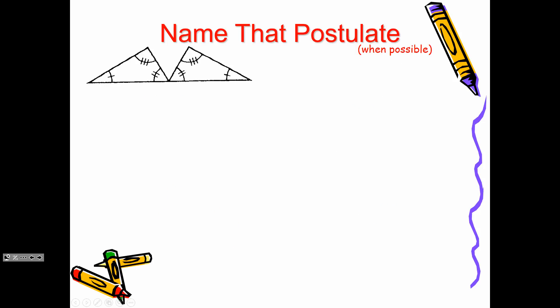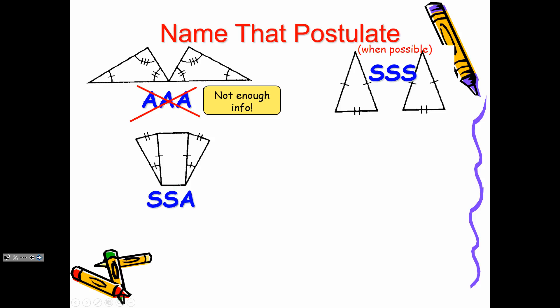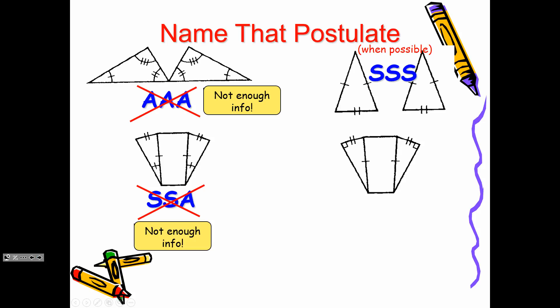Let's try these. No, yes, no — that's AAA, we can't do that, not enough information. What about here? Yes — Side-Side-Side. Let's look at this one. That's a no — no donkey. HL! The HL — yes, that should have been HL. I'm going to fix that one. Yes, HL.